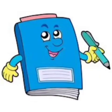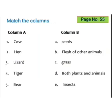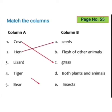Now it's time to complete the textbook exercises. Dear children, turn to page number 55 in your science textbook. Match the columns: Cow — Grass. Hen — Seeds. Lizard — Insects. Tiger — Flesh of other animals. Bear — Both plants and animals.